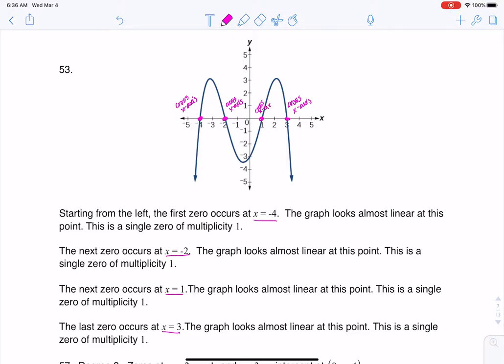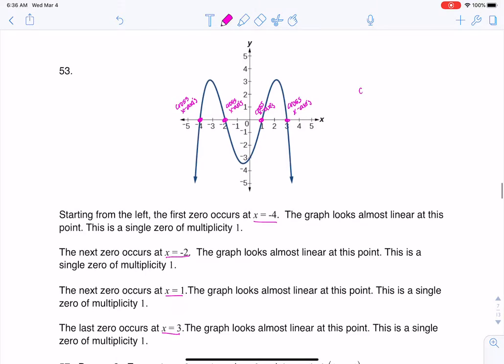None of them are bouncing off of the x-axis. And whenever you pass through the x-axis, whenever you cross the x-axis, that means you have an odd multiplicity. So I'm going to go with the most basic number of a multiplicity of 1. That's my first odd number that's positive.